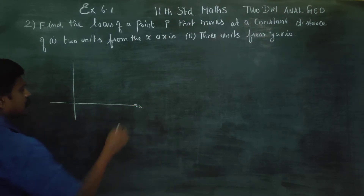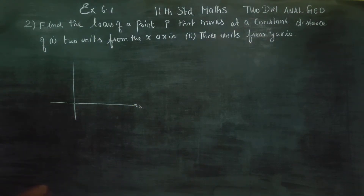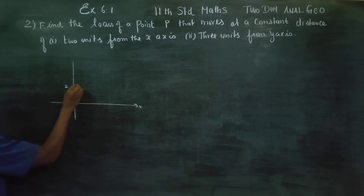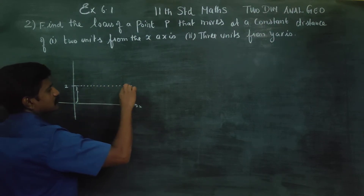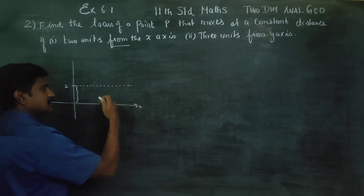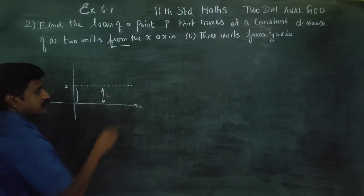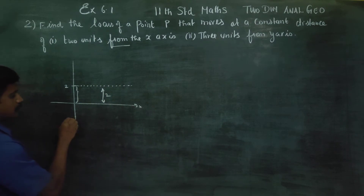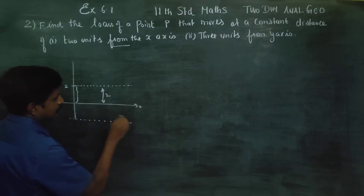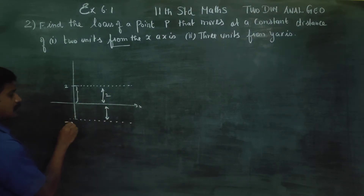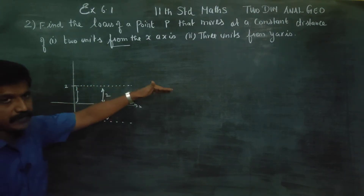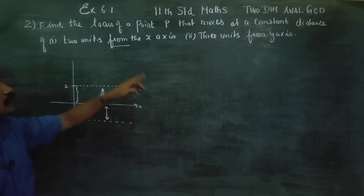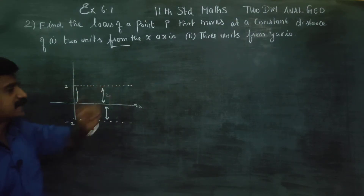In the x-axis, 2 units distance. Here, measure 2 units. Inge measure ppnungu 2 units. From x-axis, x-axis latham poogudhu — measure 2 units. Or from below, measure 2 units. 1 point to trace at a constant distance of 2 units from x-axis.